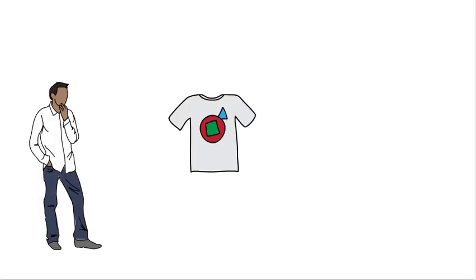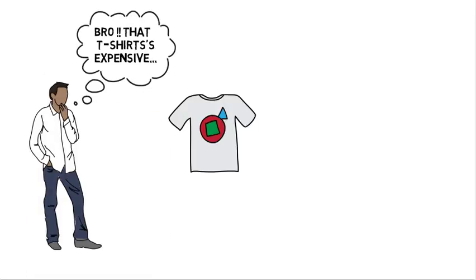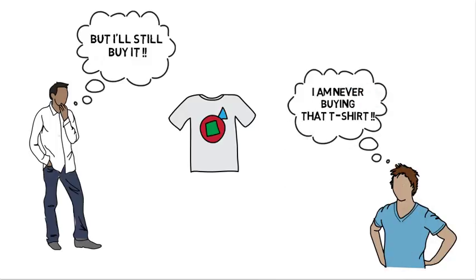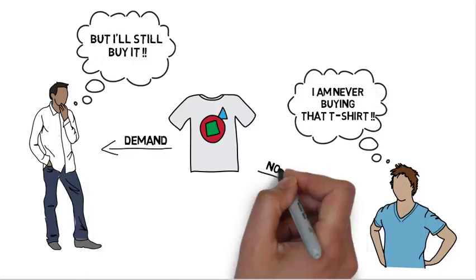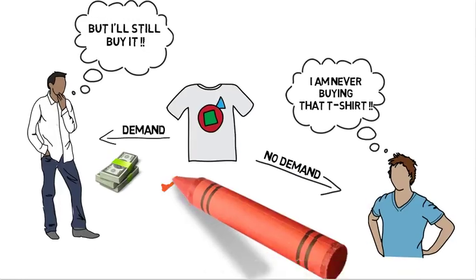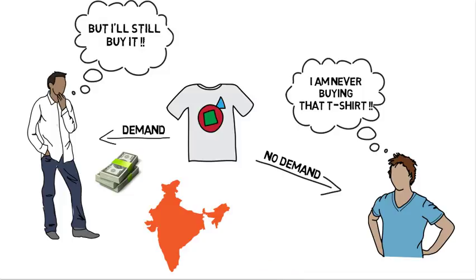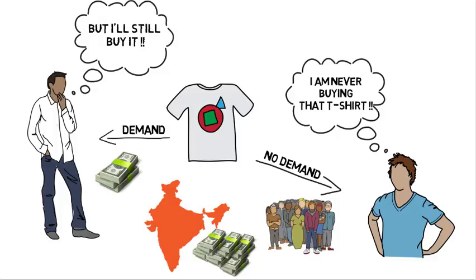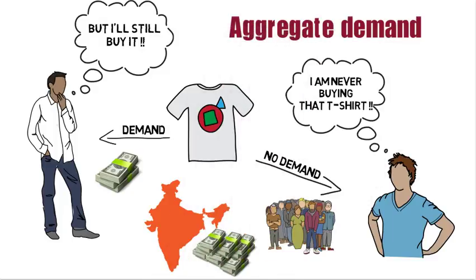When you go out to buy a t-shirt, your demand for the t-shirt heavily depends on your ability to pay for it. If you pay 1000 rupees and purchase it, then you demanded it. And if you didn't pay and did not purchase it, then you did not demand it. Which means your demand can be measured with the help of the expenditure done by you. Similarly, a country's demand can be measured with the help of the expenditure done by the country, which includes all the residents of the country. Hence, we call such demand as aggregate demand.